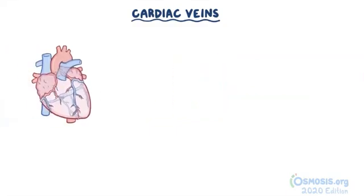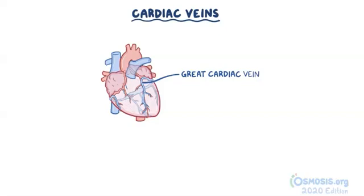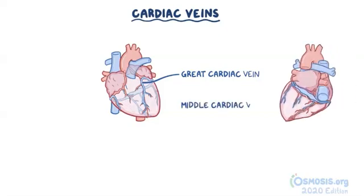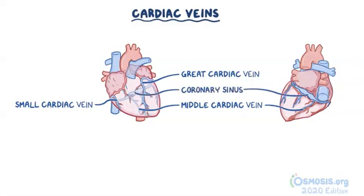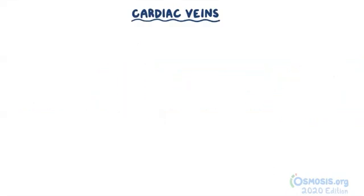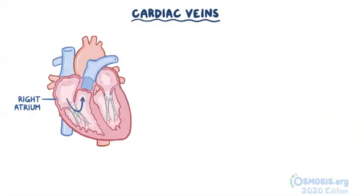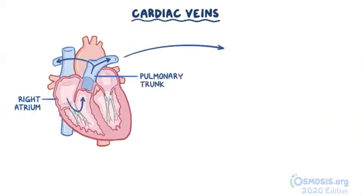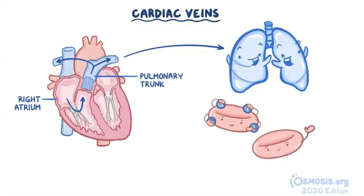Just like their arterial counterparts, there's the great cardiac vein in the anterior interventricular sulcus, a middle cardiac vein in the posterior interventricular sulcus, and a small cardiac vein running along the inferior margin of the right heart. All three cardiac veins empty into one big vessel behind the heart called the coronary sinus, which empties into the right atrium. There are also anterior cardiac veins which generally empty directly into the right atrium, bypassing the coronary sinus. Blood then gets pumped from the right atrium to the right ventricle, through the pulmonary trunk, and finally to the lungs where red blood cells pick up oxygen and dump off carbon dioxide.